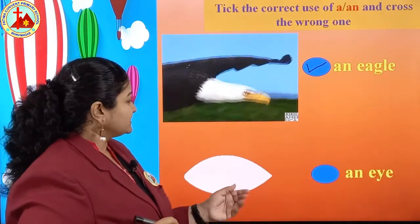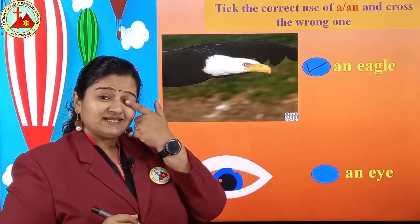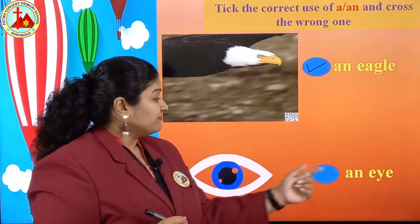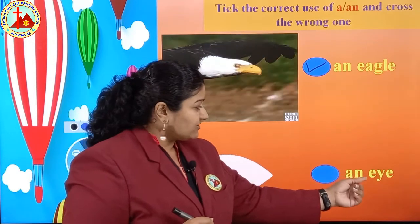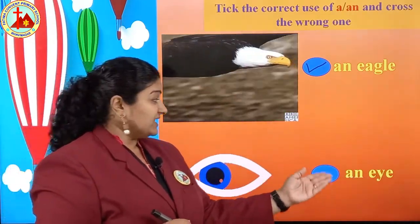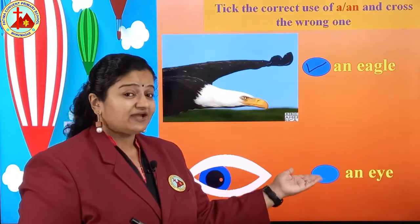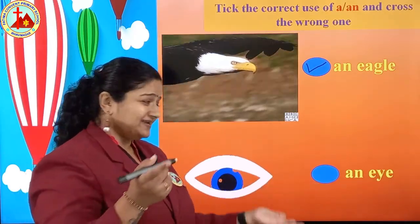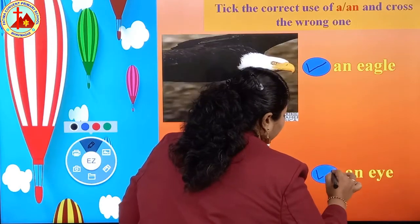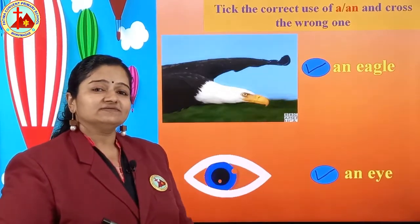Next one — first letter is E. Before E, AN is written. E is a vowel. So this sentence is right — put a tick mark, because E is a vowel.